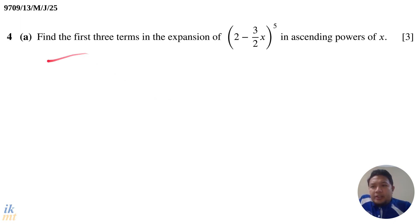So first, question 4 part A: find the first 3 terms in the expansion of (2 minus 3 over 2x) power 5 in ascending powers of x, and this is 3 marks.